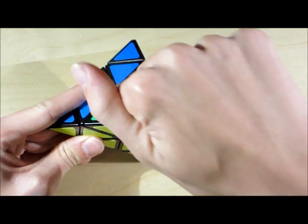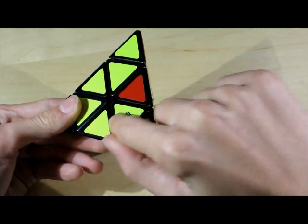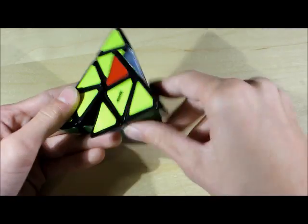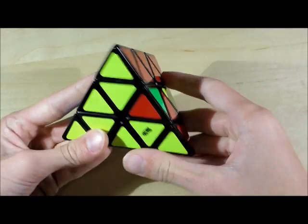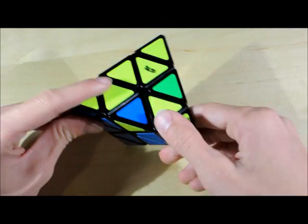Alright. The next step is you want to take the edge that's here and put it in its position. Now you may need to turn this layer to line it up with the position. So that's what you're going to want to do.